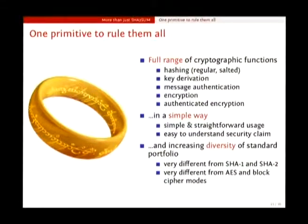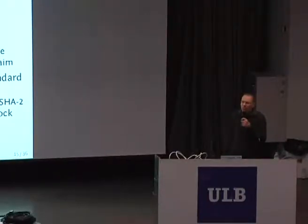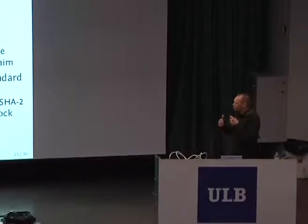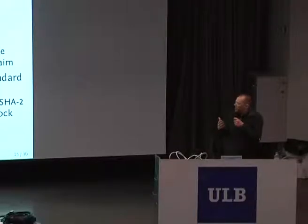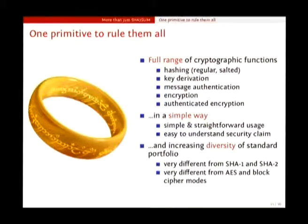All these things can also be done, of course, by a block cipher. But in a block cipher, it becomes reasonably complex to define all these modes — for instance, authenticated encryption modes, which are not trivial to specify — while for Keccak, for the permutation, it's more simple and straightforward. It also gives you more flexibility because you can choose the rate and the capacity. It's also easy to understand the security claim. In cryptography, you cannot prove that something is secure. What you can do is claim that something is secure and wait for people to attack. If there are no attacks and it takes years, people can gain confidence in the cryptography.